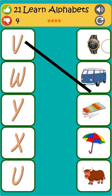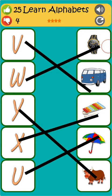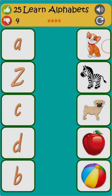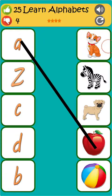B is for van. W is for watch. Y is for yak. X is for xylophone. U is for umbrella. A is for apple. Z is for zebra.